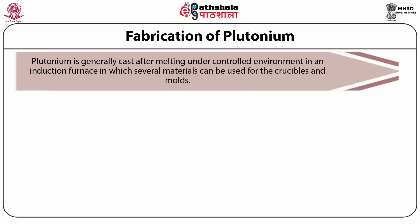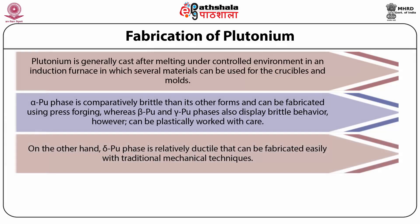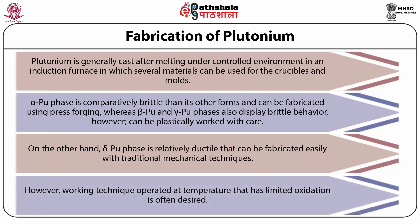Plutonium is generally cast after melting under a controlled environment in an induction furnace in which several materials can be used for the crucibles and molds. Alpha-Pu phase is comparatively brittle than its other forms and can be fabricated using press forging, whereas beta-Pu and gamma-Pu phases also display brittle behavior. However, they can be plastically worked with care. On the other hand, delta-Pu phase is relatively ductile and can be fabricated easily with traditional mechanical techniques. However, working techniques operated at temperatures that limit oxidation are often desired.